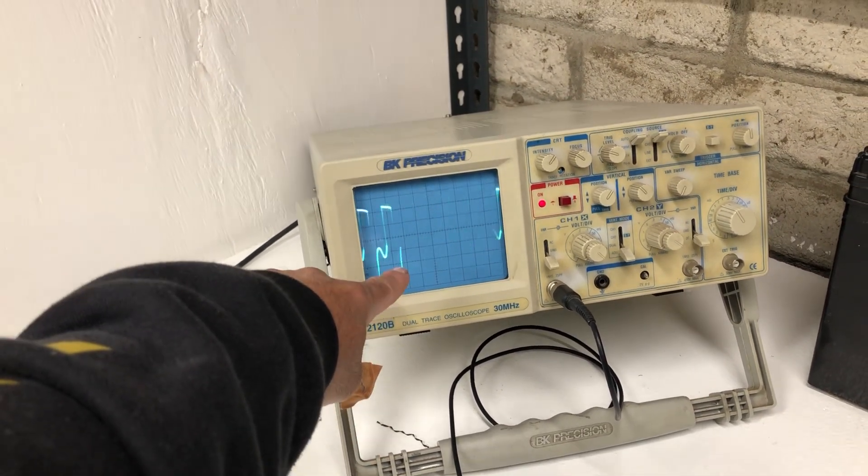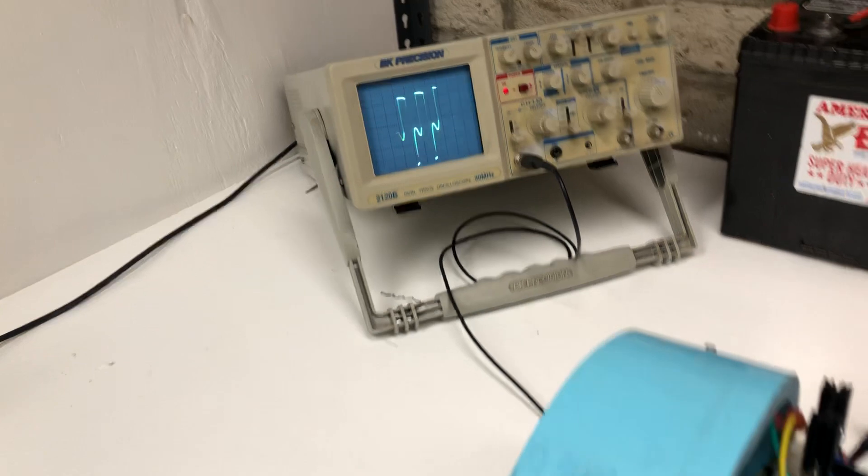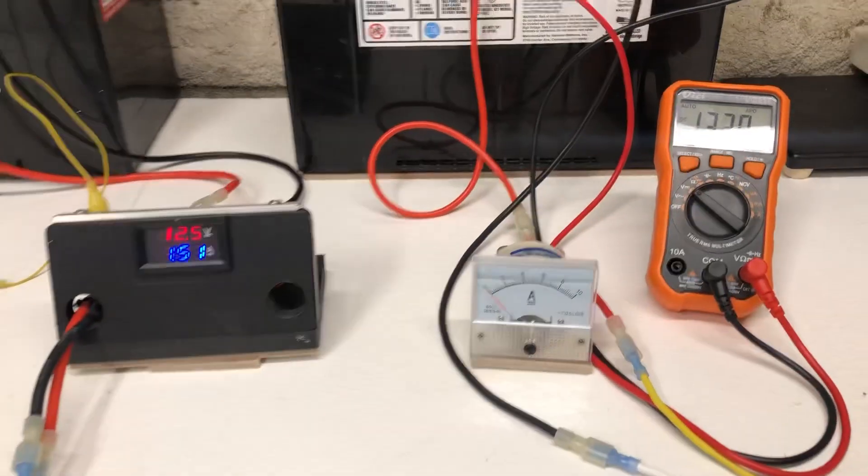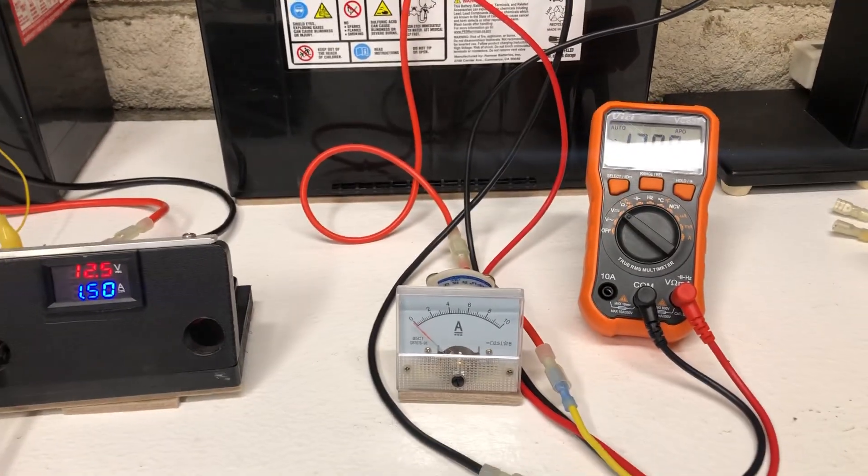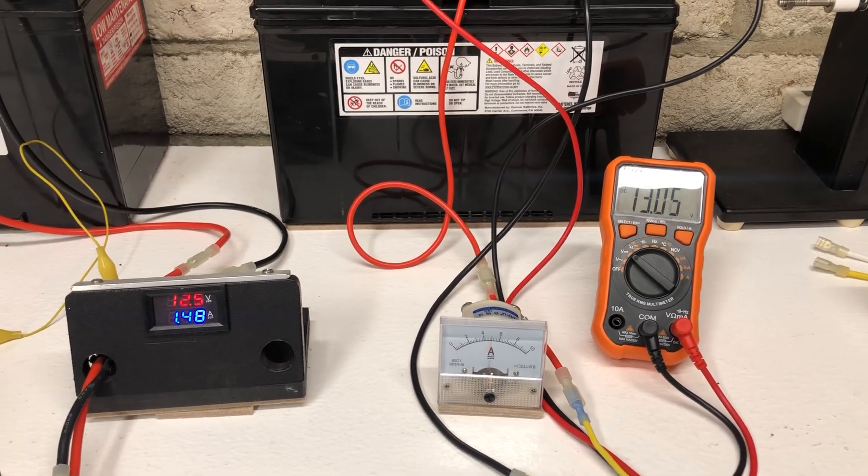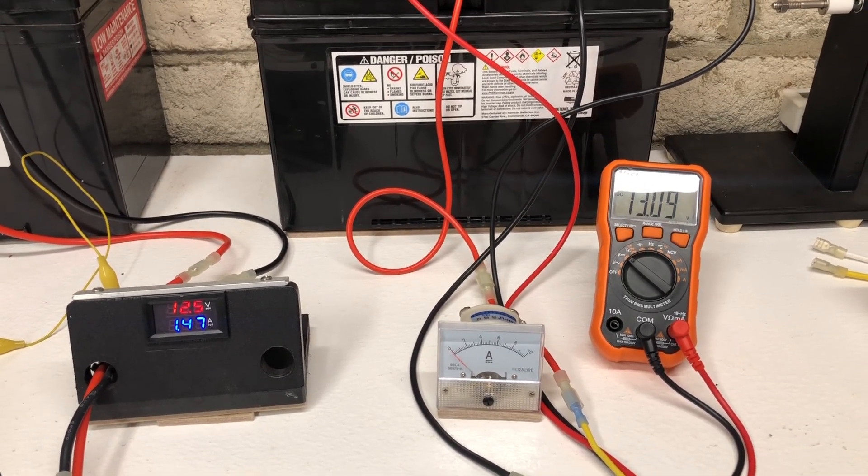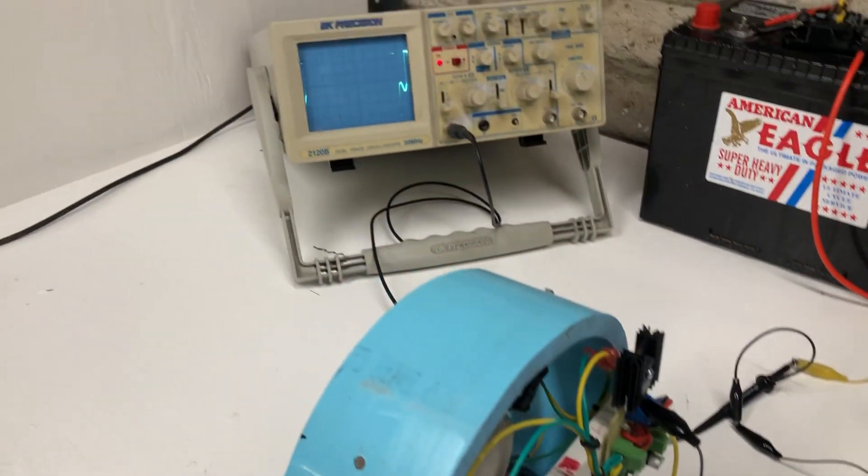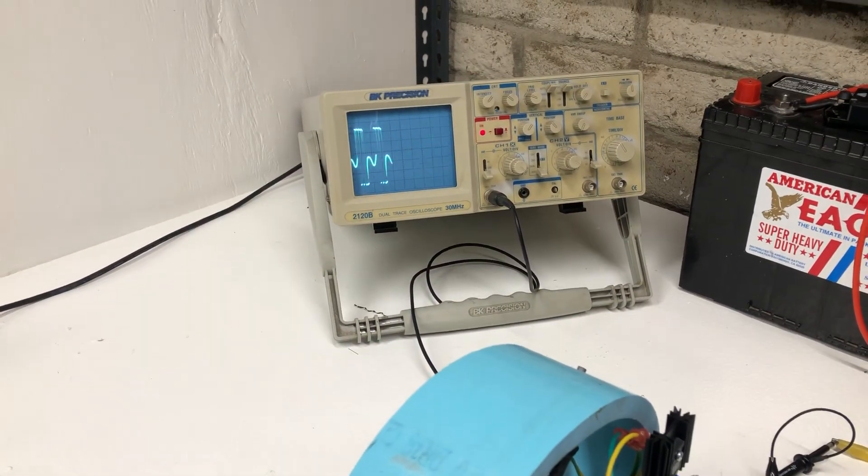And here's our output. It's about the same, about every three seconds, six amps. And we could dim it down just like we did before.